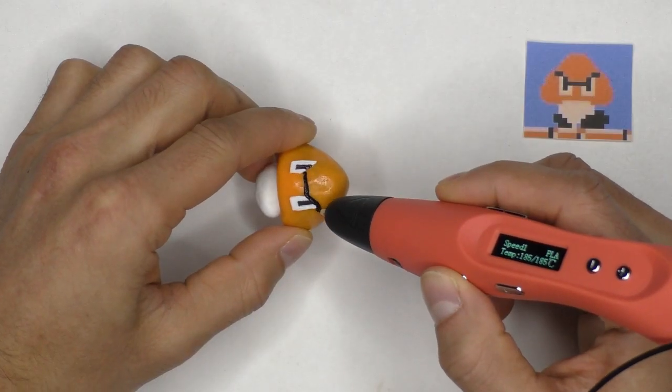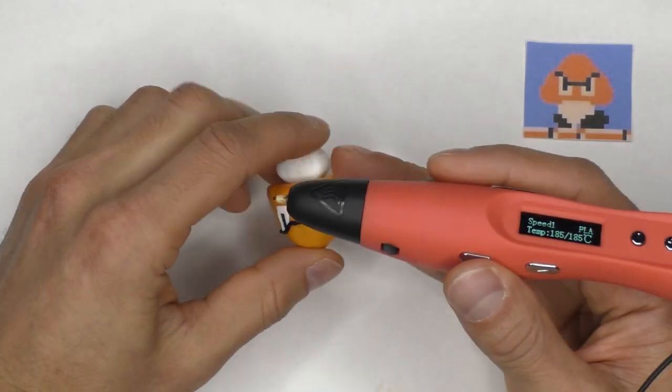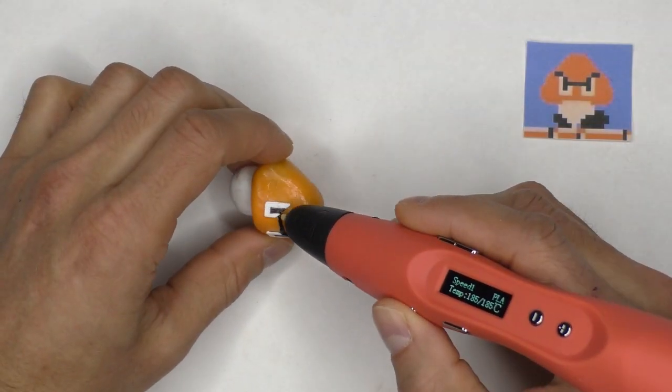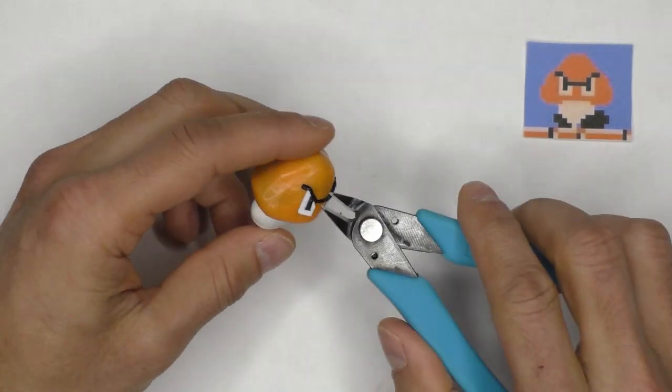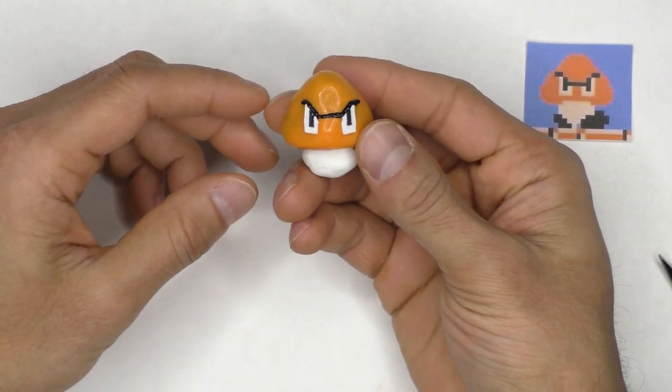And it's at this point where the Goomba really starts to come together. But this was definitely my favorite part of the Goomba and as I was doing it, I realized he's really kind of got a unibrow thing going on. Some may say he needs a makeover, but I really think this one feature makes the figure.